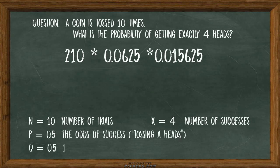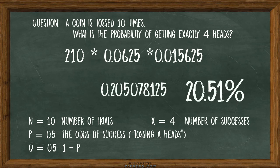So for a coin that is tossed 10 times, the probability of getting exactly 4 heads is 0.205078125, or about 20.51 percent.